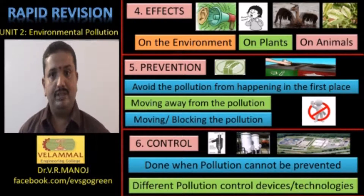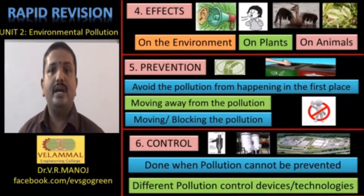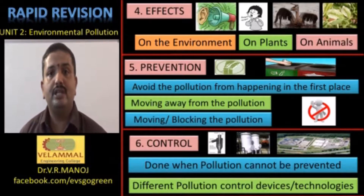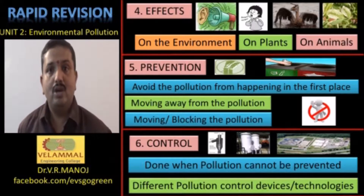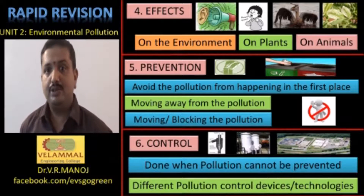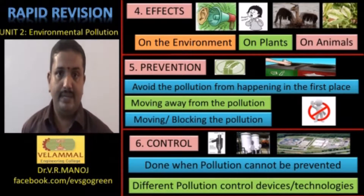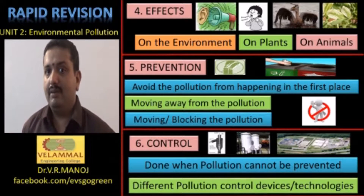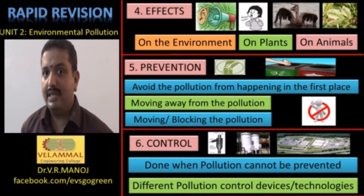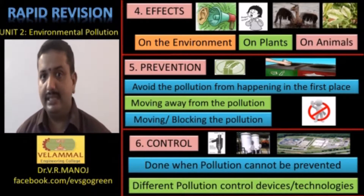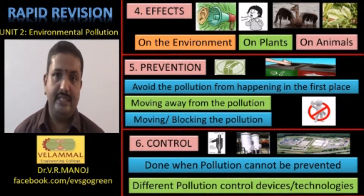In water pollution prevention, you have specific control measures or methods which are the effluent treatment plants, the wastewater treatment plants, and the water treatment plants. In any of the water treatment plants, you will have to remember that they are divided into primary treatment, secondary treatment, and tertiary treatment.